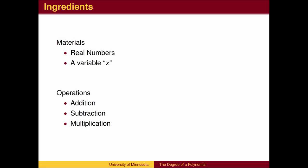We begin with the real numbers and a variable, usually x. We then create as much as we can using addition, subtraction, and multiplication. What kind of things can we get?